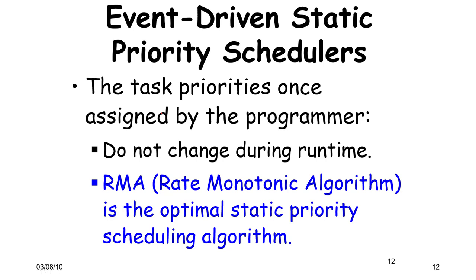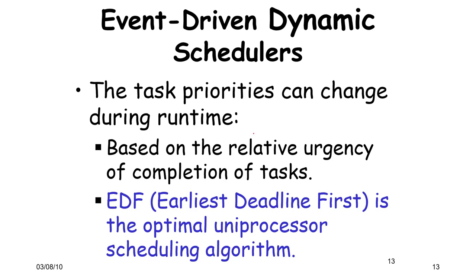Let us now look at event-driven static priority schedulers, where task priorities once assigned by the programmer do not change during runtime. The shining example is the Rate Monotonic Algorithm, which has been proven optimal when priorities are static — we will discuss this in the next lecture. For dynamic priority scheduling, we discuss EDF, where task priorities can change during runtime based on relative urgency. EDF is an optimal algorithm for uniprocessors; for multiprocessors there are other algorithms which we will discuss later.